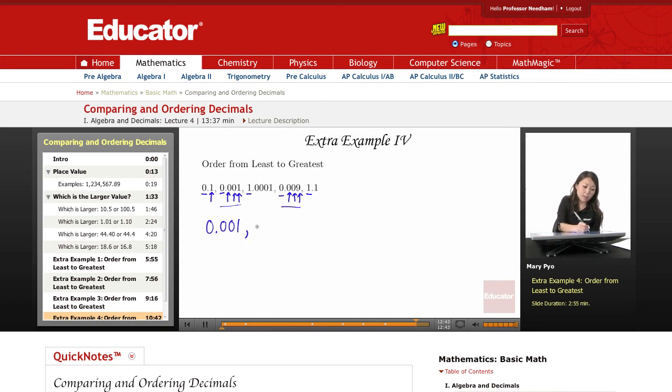Then this is my next smallest, 0.009. And then this one right here, right, because that had no whole number, 0.1.